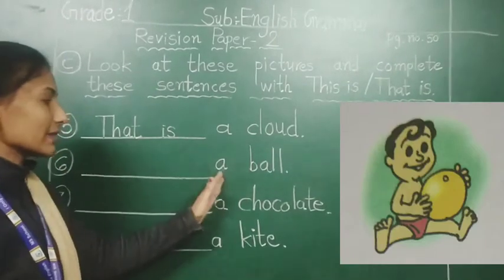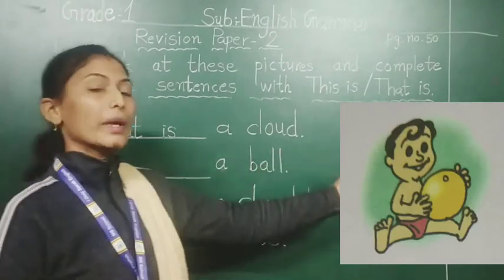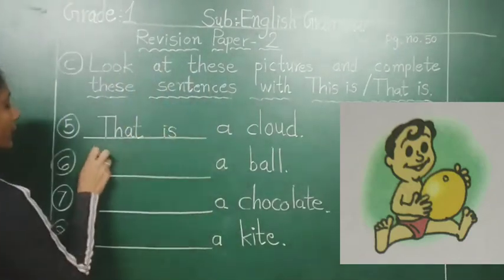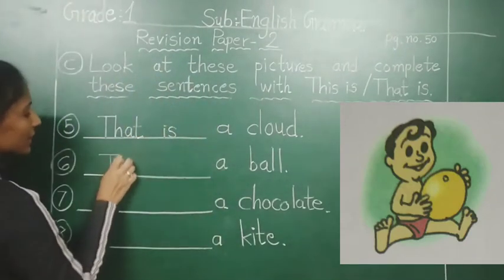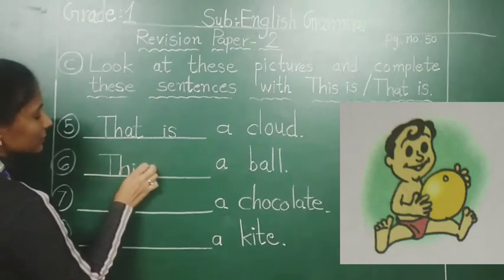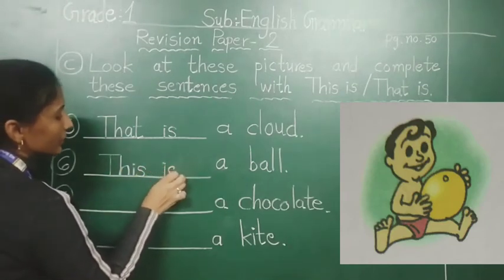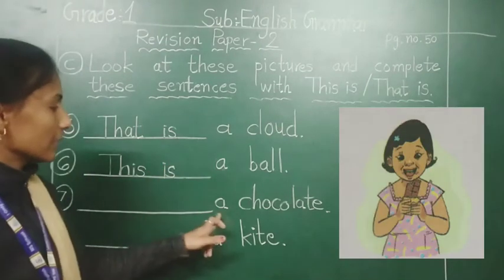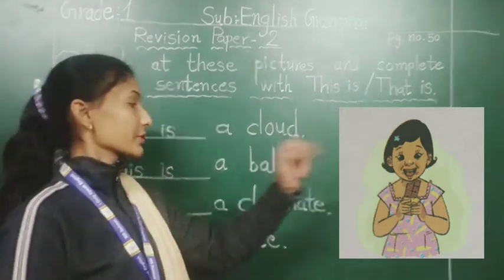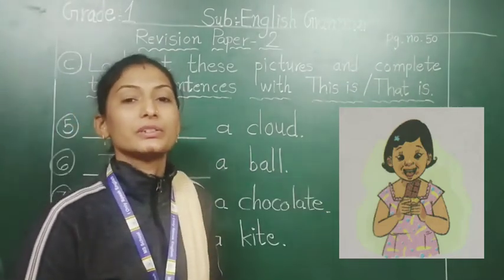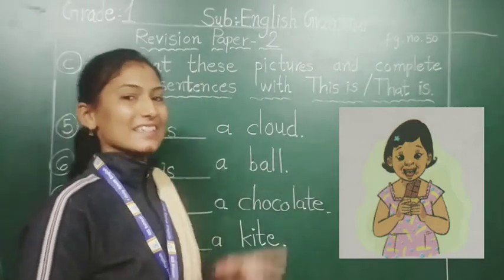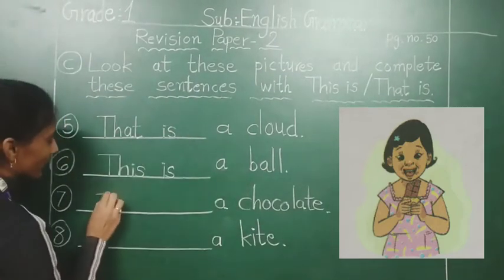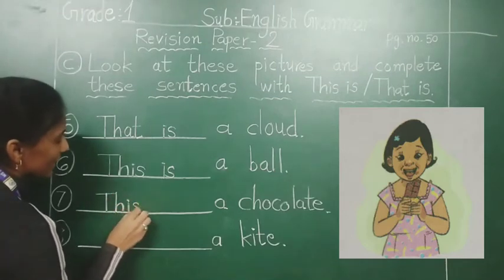Six — that is a ball. Look at this picture — this is the ball, so we will write here: This is. Seven — that is a chocolate. Look at this picture — this is a chocolate, so we will write here: This is.